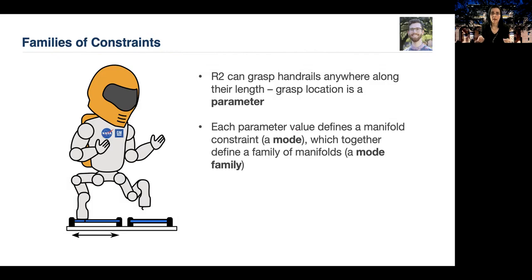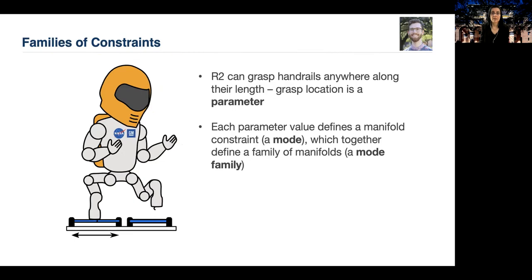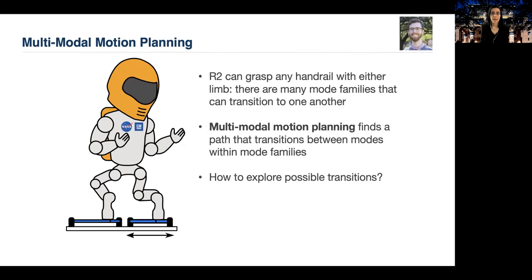In this problem, we would like to consider not just one grasp of the handrail, but all grasps of the handrail, where this corresponding constraint is parameterized by their location. So the grasp location is a parameter. In the next slide, I will show you R2 in a variety of valid grasps along the length of the handrail, each of which is a similar manifold constraint. The collection of all grasps on one handrail defines a parameterized family of manifold constraints, which are continuously related. We call it a mode family. Here is one grasp, here is another, and here is yet another one.